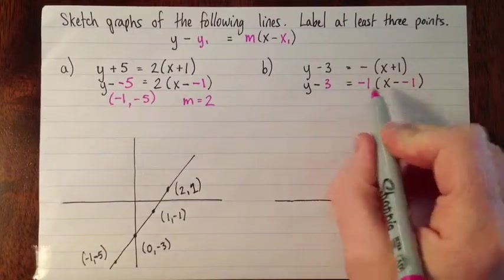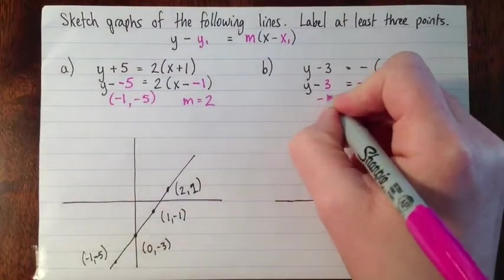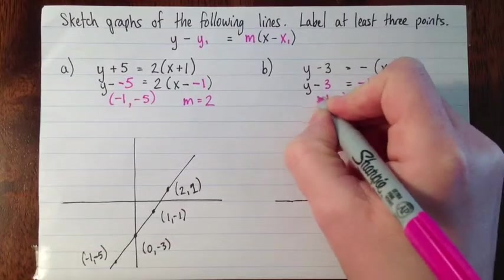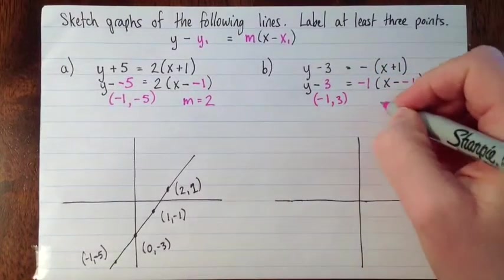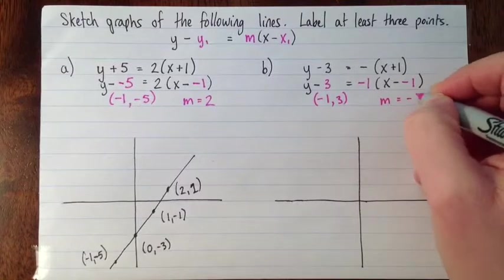So this tells us that a point on the line is the point (-1, 3), so x₁, y₁, and that the slope of the line is -1.